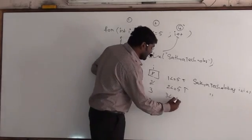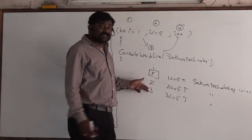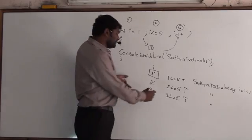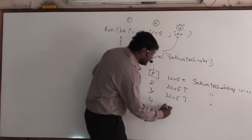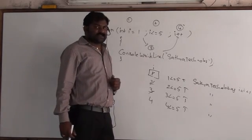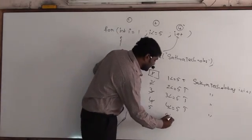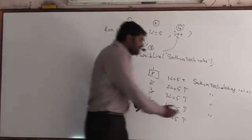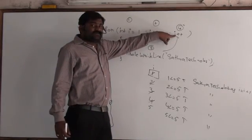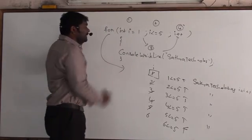i = 3: 3 ≤ 5 is true — print 'such a technology' for the third time. i++ → i = 4: 4 ≤ 5 is true — print for the fourth time. i++ → i = 5: 5 ≤ 5 is true — print for the fifth time. Now i++ → i = 6: 6 ≤ 5 is false — come out of the loop.